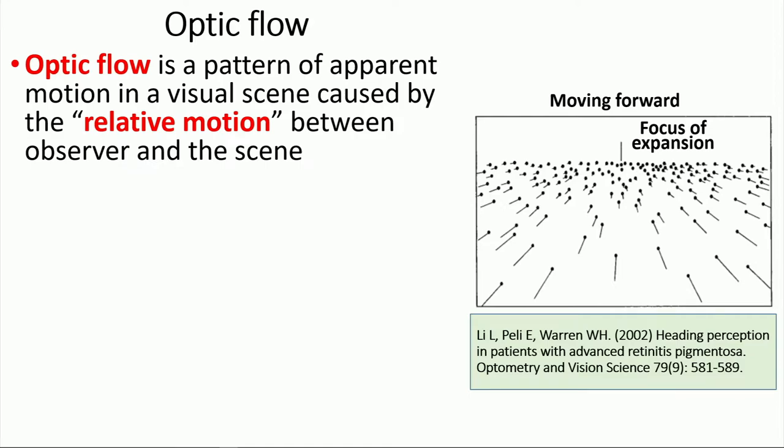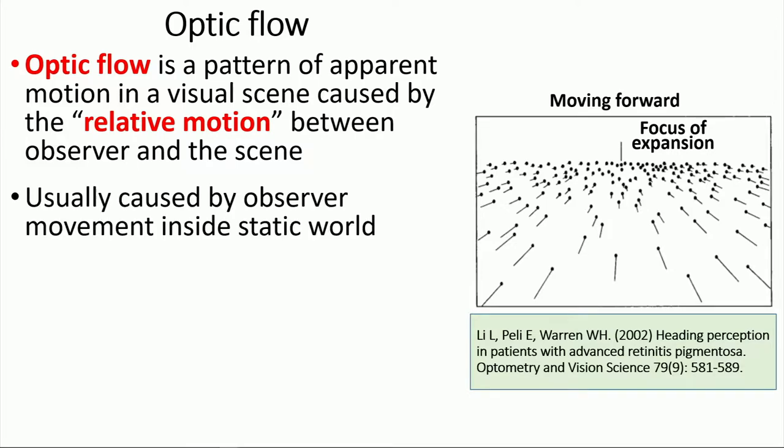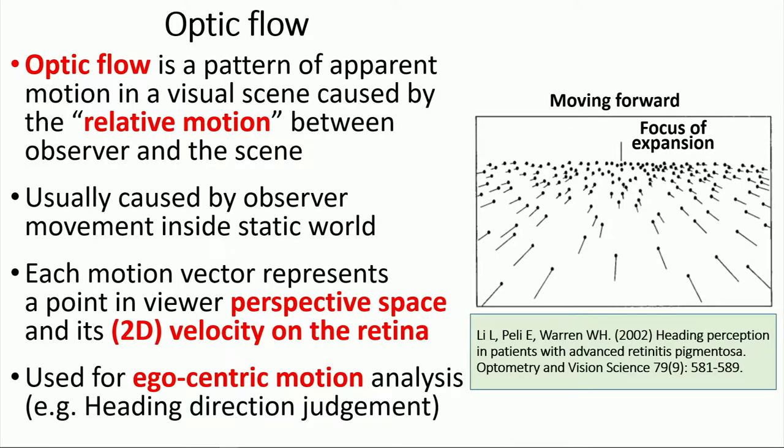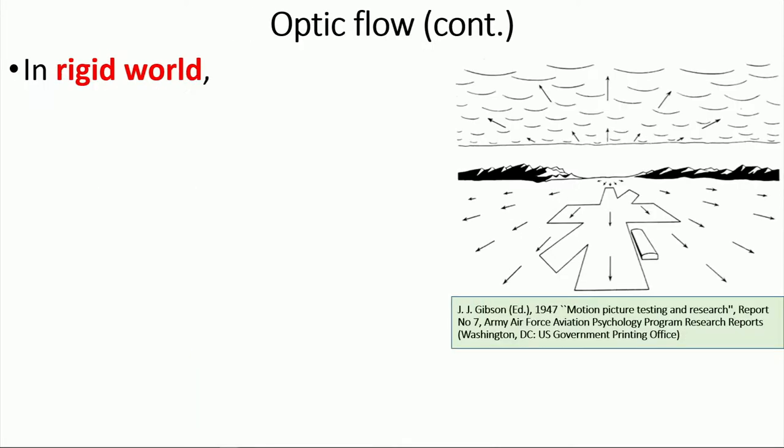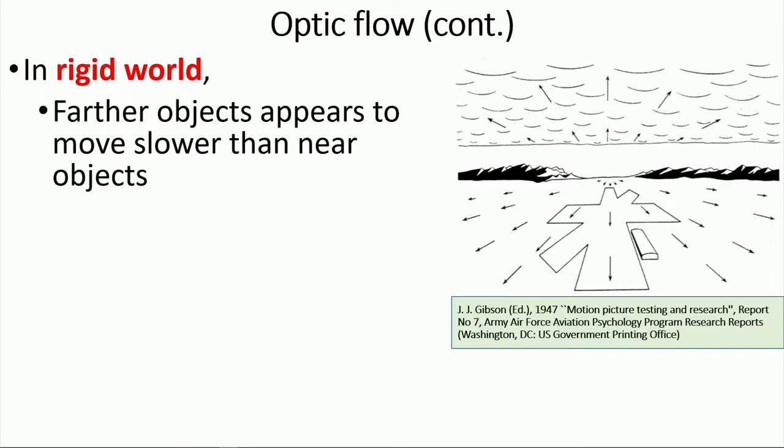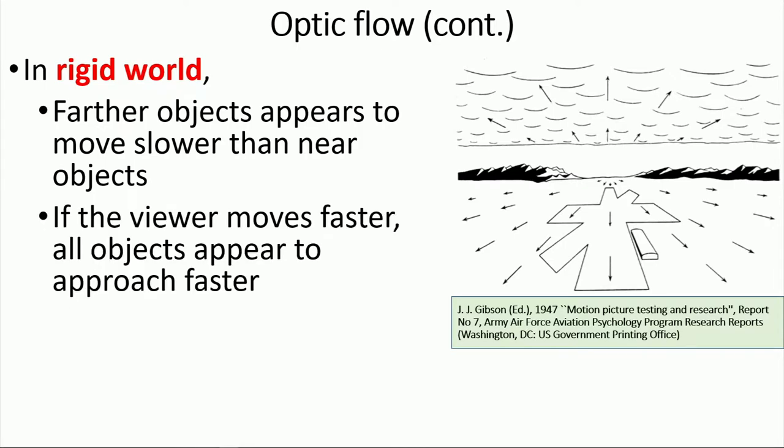Optic flow is a pattern of apparent motion caused by the relative motion between the observer and the scene, usually caused by the observer moving inside of the static world. Each motion vector represents points in a perspective space and its velocity on the retina. As shown in the figure, it is often used for egocentric motion analysis. In the rigid world, far objects appear to move slower than near objects, and if the viewer moves faster, all objects appear to move faster.